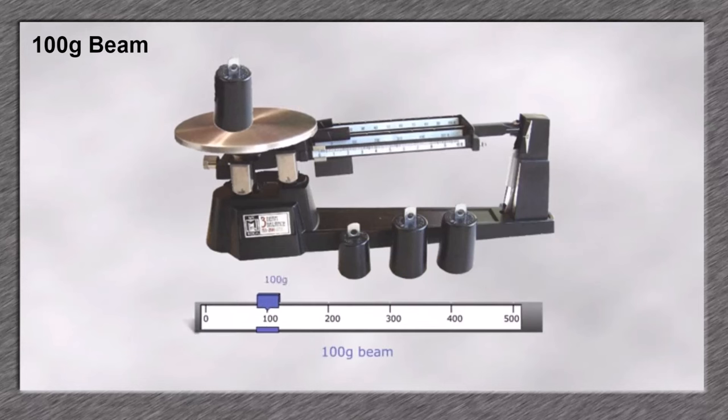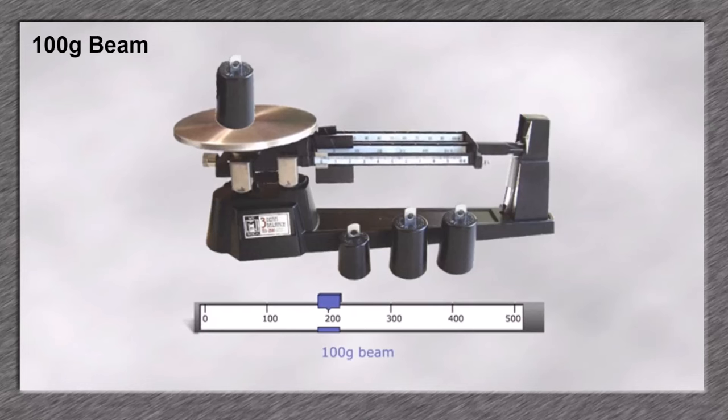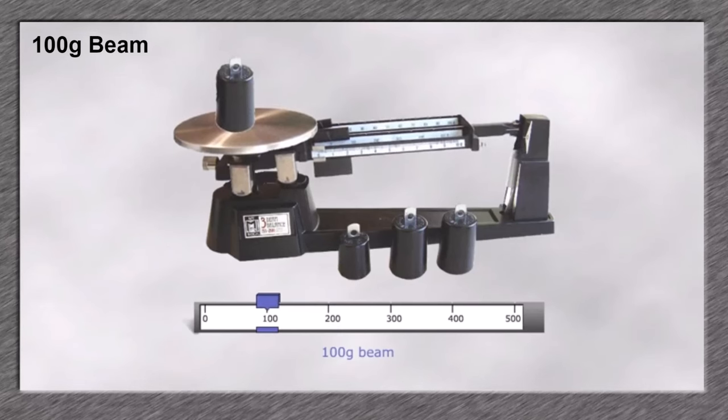Move the 100 gram weight to see if the object needs that much weight or more. As you can see, the scale did not move with 100 grams, so we need to move it to 200 grams. 200 grams is too much and causes the scale to shift. We have to move the scale back to 100 grams and switch to the next scale.